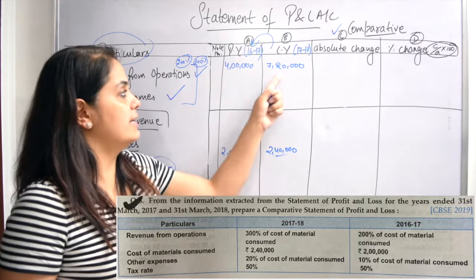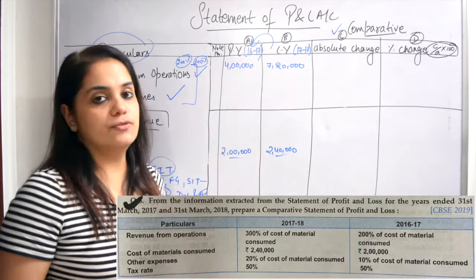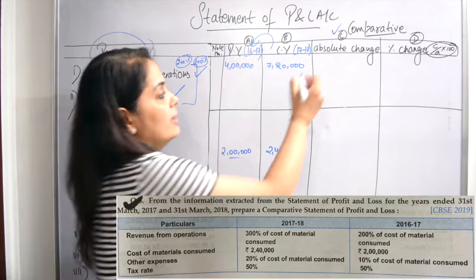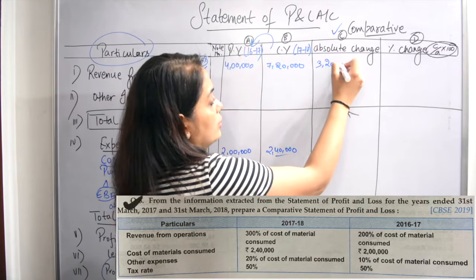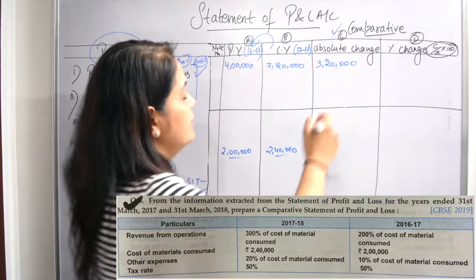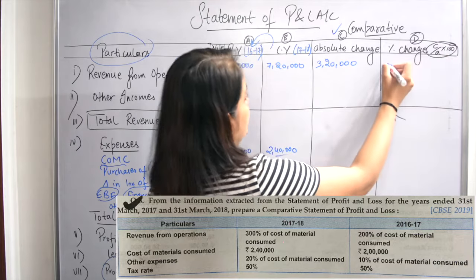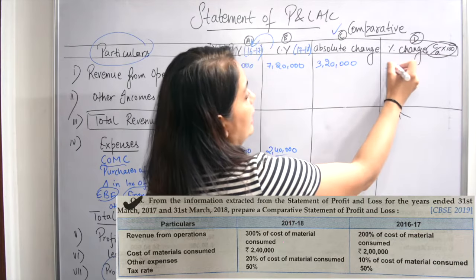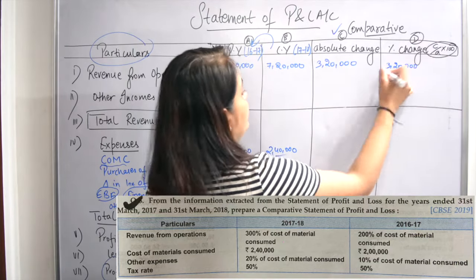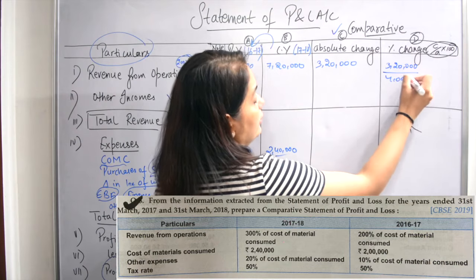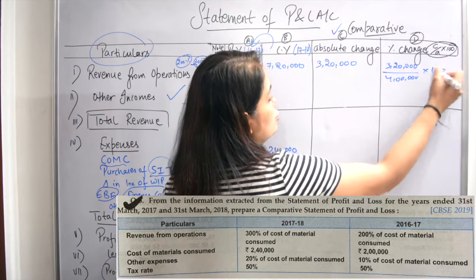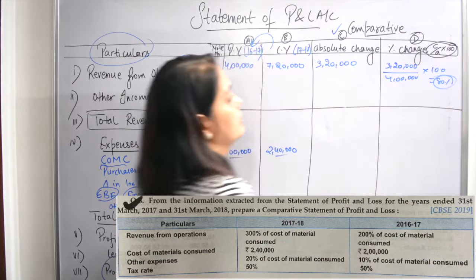Now we will find the absolute change: 7 lakhs 20,000 minus 4 lakhs equals 3 lakhs 20,000. Now we divide: 3 lakhs 20,000 divided by 4 lakhs into 100. If we solve this, 80% will come. So the percentage change for revenue from operations is 80%.